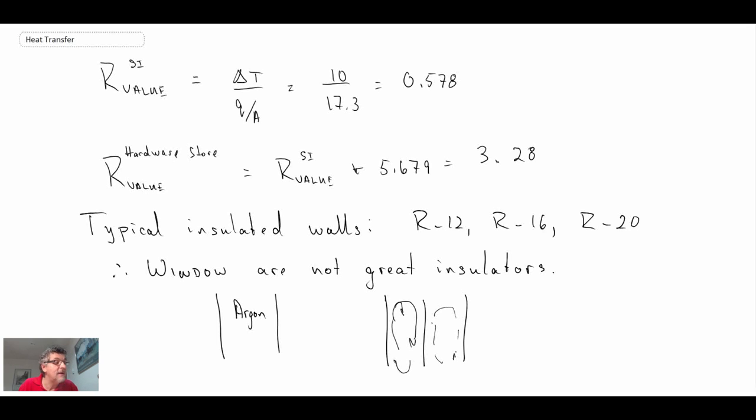So anyways, that is looking at the case of enclosed vertical space. And we looked at an example of the window. We used the correlation. We determined the heat loss and the R value. And that will conclude our coverage of natural convection flows.